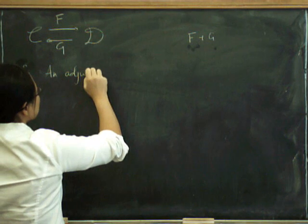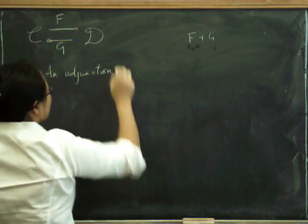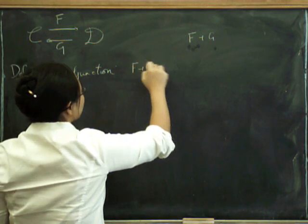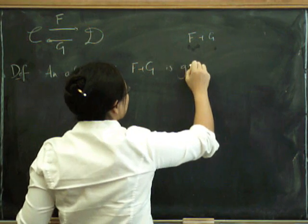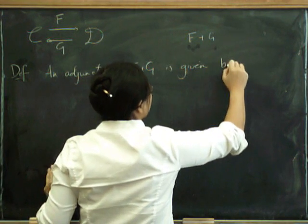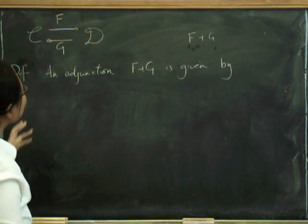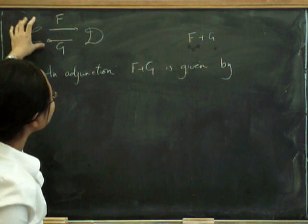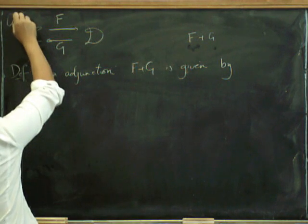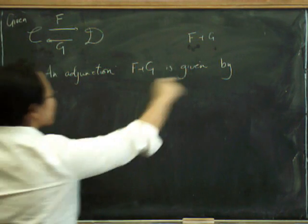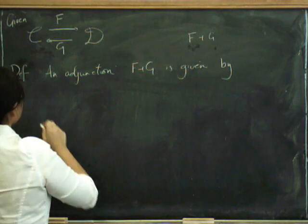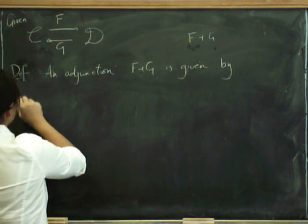An adjunction of F left adjoint to G is given by... I haven't said what these functors are. Well, given functors like this, an adjunction, F left adjoint to G, is given by a pair of natural transformations.